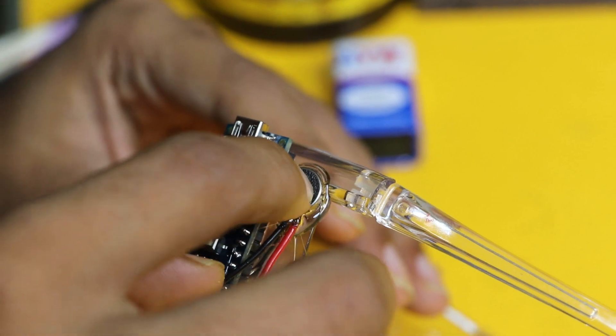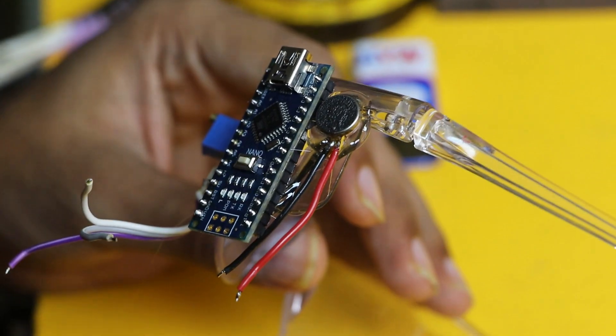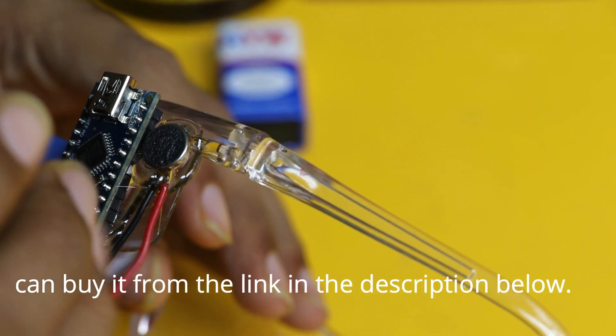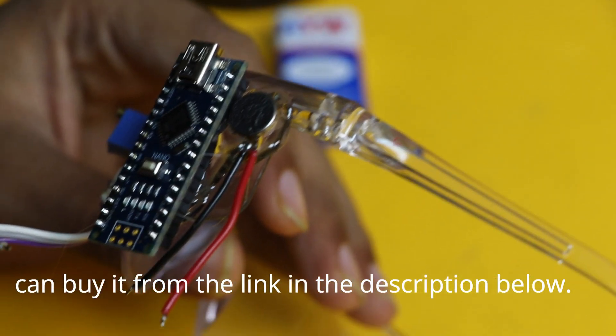Now this is the vibration motor. You have to stick the vibration motor on the side of the Arduino Nano. This is the best place for this vibration motor. As I already told you, you can use any type of vibration motor. This is the mobile phone vibration motor of Samsung mobile phone.